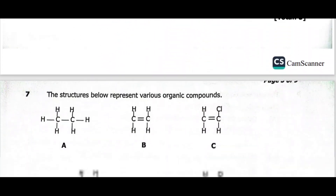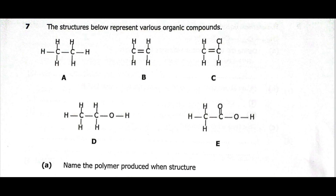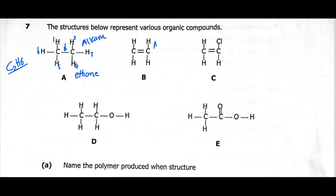Now let's look at question 7. We are looking at structures that represent various organic compounds. For compound A, we have two carbons and six hydrogens — the chemical formula is C₂H₆. This is an alkane, because there is only a single bond here, and the name of this alkane will be ethane. For B, we can see that this is an alkene, because there is a double bond here, and the name of this one is ethene. The suffix -ene indicates an alkene; ETH- means there are two carbons.